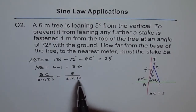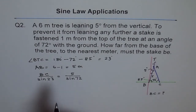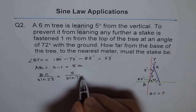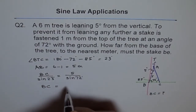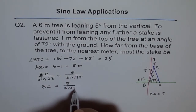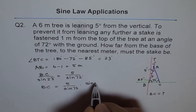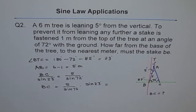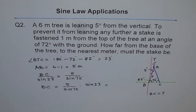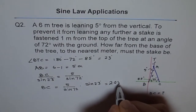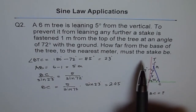Since 5 over sine of 72° is a constant, we multiply that constant by sine of 23° to get BC. So BC equals (5 divided by sine of 72°) times sine of 23°. Using the calculator: 5 ÷ sin(72°) × sin(23°) gives us approximately 2.0541.